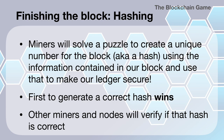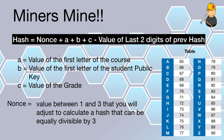Miners have some special work to do. Miners will solve a puzzle to create a unique number for the block — we call this a hash in blockchain parlance — using the information contained in our block, and they will use this to make our ledger secure. The first miner to generate a correct hash is going to win. Other miners and nodes will verify if that hash is correct. I then give instructions to the miners to actually try to generate a hash.